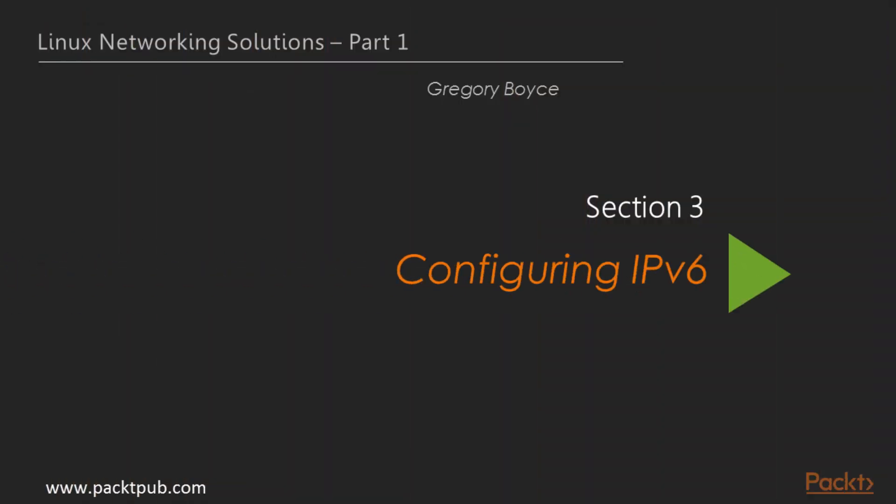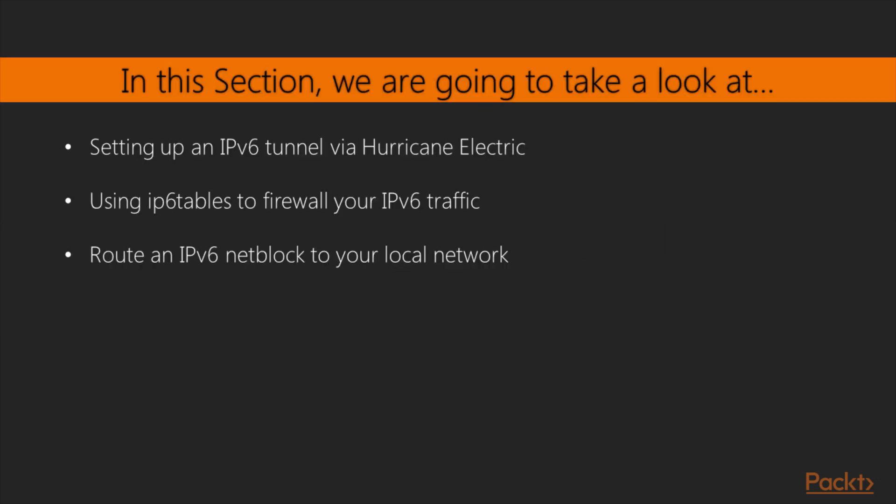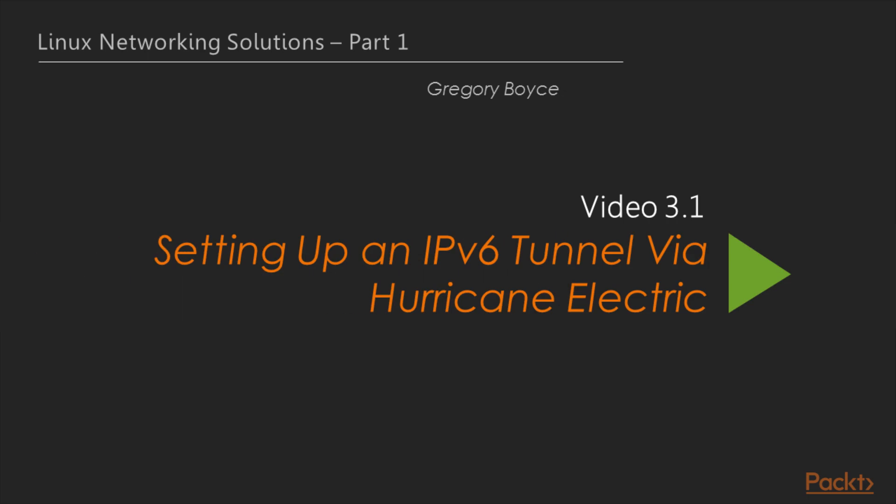Welcome to the brand new section of this course: Configuring IPv6. Here's an overview of the section. We'll begin by setting up an IPv6 tunnel via Hurricane Electric, then look at how to use IPv6 tables to firewall your IPv6 traffic, and finally route an IPv6 net block to your local network. So let's start with the first video of this section, which is setting up an IPv6 tunnel via Hurricane Electric.